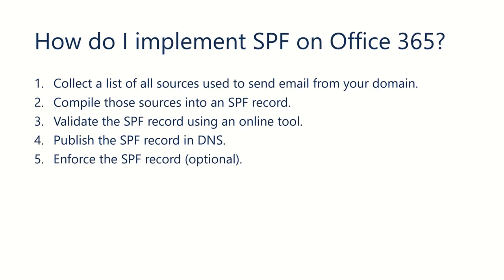There are a few steps you need to perform in order to implement SPF on Office 365. The first thing you do is collect a list of all the sources that you use to send email from your domain. After that, you want to compile those sources into an SPF record.